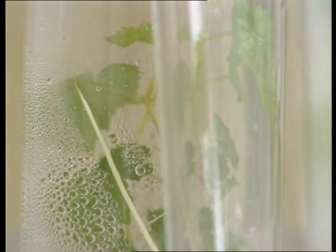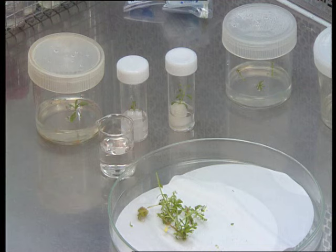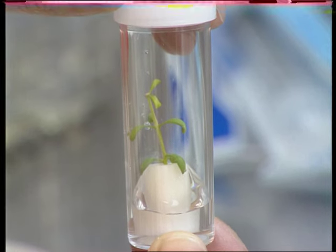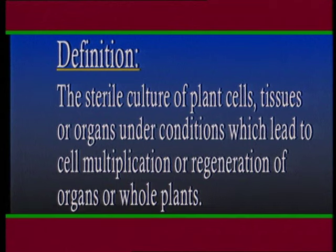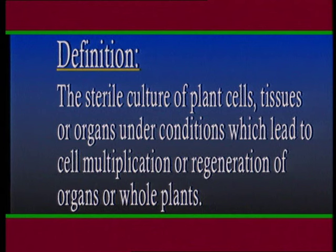Optimum environmental conditions with regard to physical, nutritional and hormonal factors are provided, and the whole process occurs on a micro scale and in vitro. In vitro literally means 'in glass,' which came into being because initially glass vessels were used for the culture.